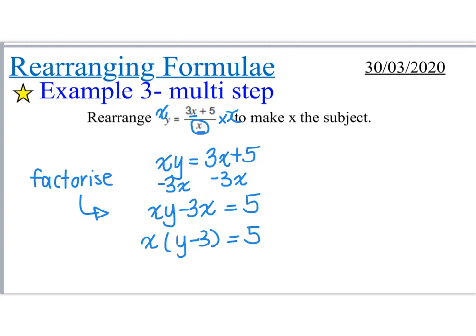So x times by y minus 3 is equal to 5. And now I can very easily get the x by itself, because instead of doing times by y minus 3, I can just divide both sides by y minus 3. So by doing that, I end up with x is equal to 5 divided by y minus 3. Now this is definitely a much more complicated question, but it's also a very common exam question.